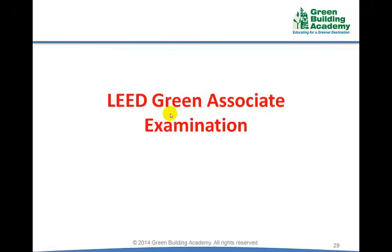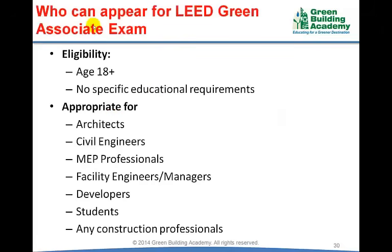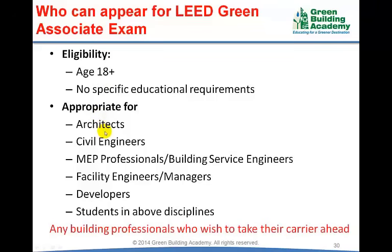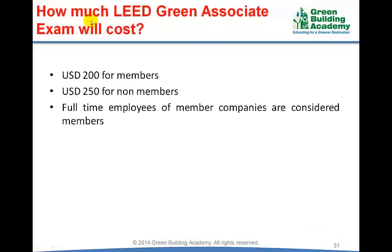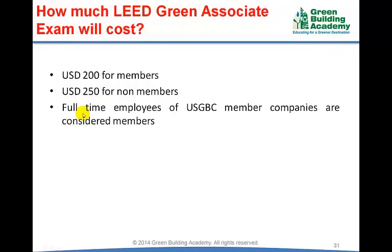Who can appear for the LEED Green Associate examination? There is no specific eligibility requirement set by US Green Building Council except that the candidate should be at least 18 years old. LEED credentials are appropriate for architects, civil engineers, building service engineers, facility engineers, facility managers, developers, or students in any of the above disciplines — essentially any building professional who wishes to advance their career. The exam fee is $200 for members and $250 for non-members. Full-time employees of US Green Building Council member companies are considered members and can avail the discount of $50.